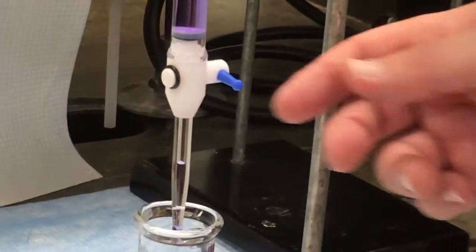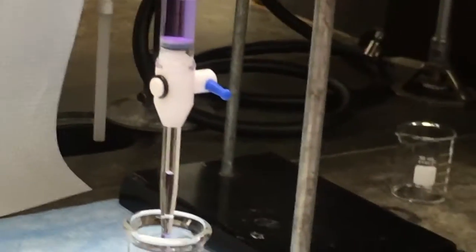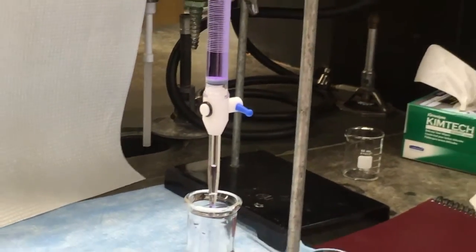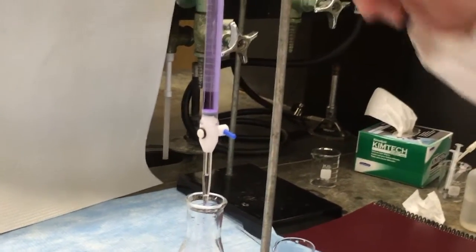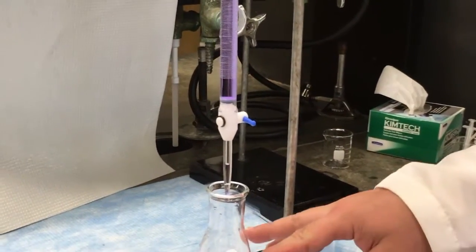Now, if I want to deliver some volume of solution, my next step is to open the stopcock and let it drain through. Now, if I'm trying, let's say we're trying to deliver 1 milliliter, I try and get down to 10.25 mils. More often, you're doing a titration where you're delivering some volume of solution and watching for a color change.